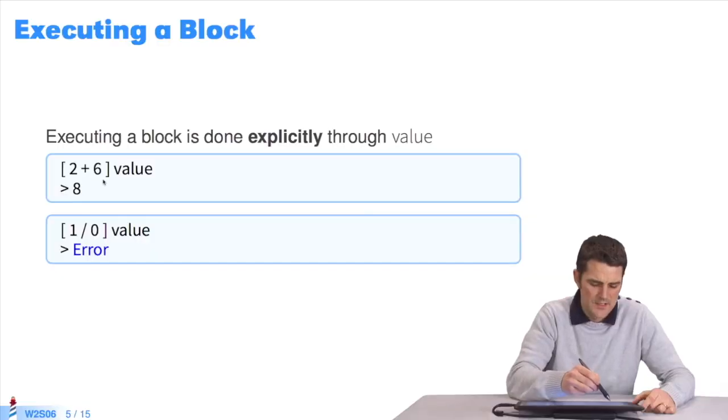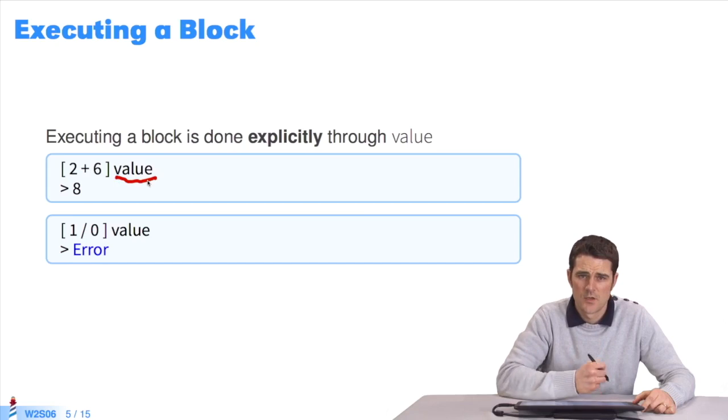To evaluate a block and the expressions in its body, you must do it explicitly through the message value. For instance, this is a block: open bracket 2 plus 6 close bracket. You send it the message value. The expressions in the body are evaluated. It returns the result, 8.